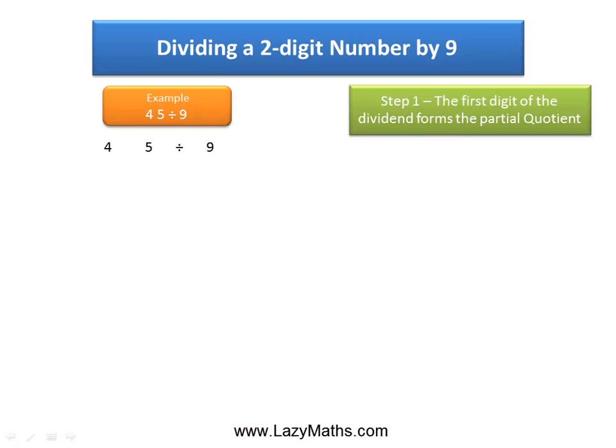The first step is to take the first digit of the 45, in this case 4, and call it the partial quotient q1.